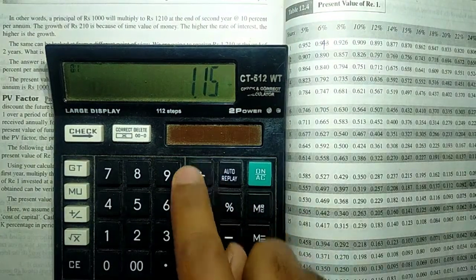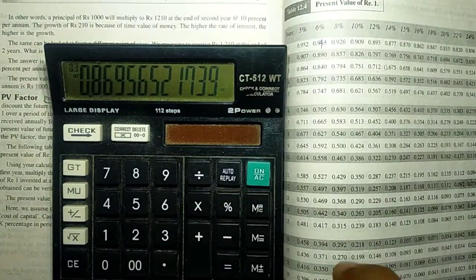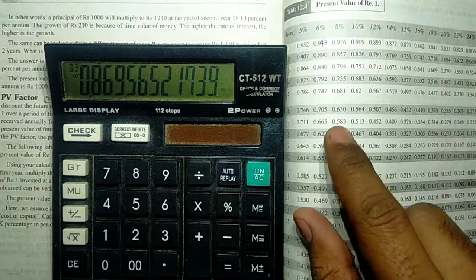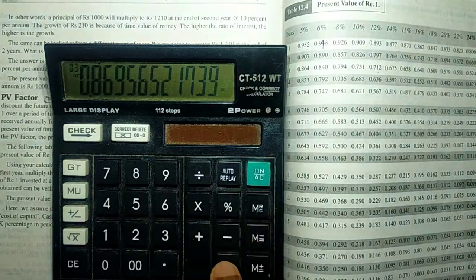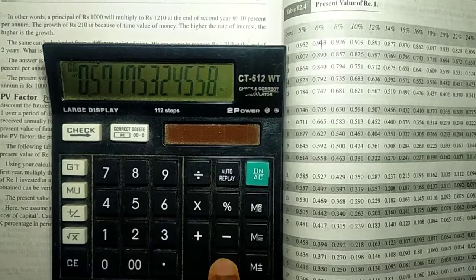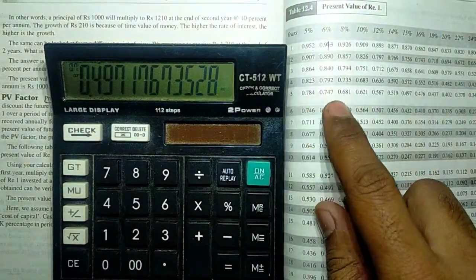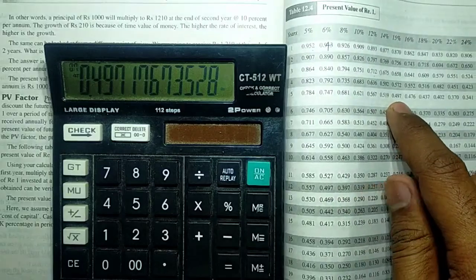Then divide and press equal. This is the first year. If you want the fifth year value, you just press equal five times: first, second, third, fourth, fifth. This is the fifth year value of 15%. You can check it.